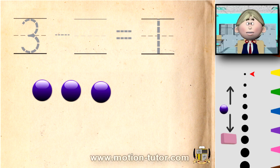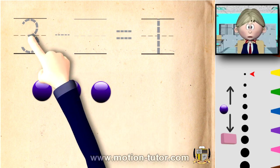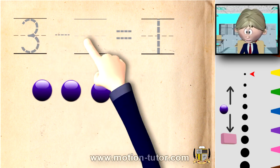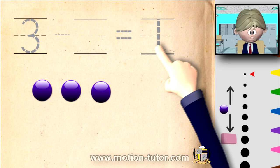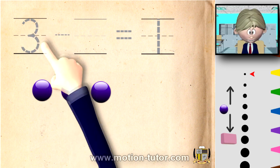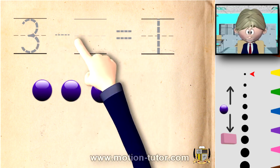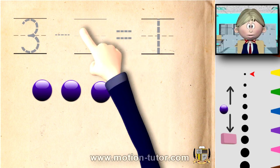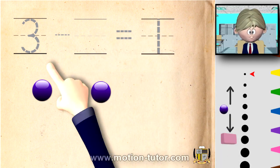Welcome to this lesson on subtraction. This time we are going to have missing parts — we're going to have to find what we take away to get the answer. We have a 3, and we're taking away some number we don't know yet, and that's going to equal 1. Subtraction is taking away: the first number is what we start with, the middle number is what we take away, and the last number is what's left over.